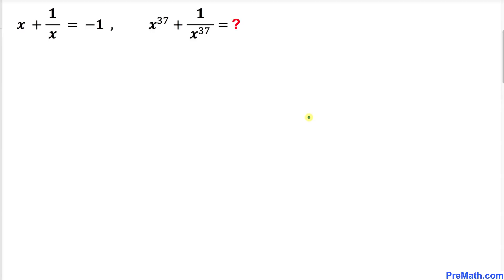Welcome to pre-math. In this video tutorial we have got this interesting problem: x plus 1 over x equals negative 1, and now we are going to find the value of x to the power 37 plus 1 over x to the power 37.